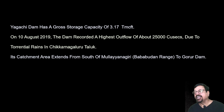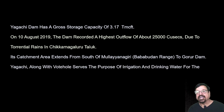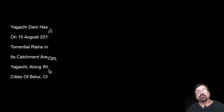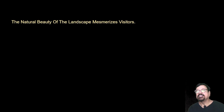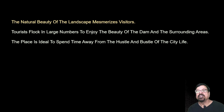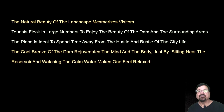The catchment area extends from south of Mulaiya Nagari — the Bababudan range — to the Gorur Dam. Yagachi, along with Vate Hole, meets the irrigation and drinking water needs of Chikamangaluru and Hassan districts. The natural beauty of the landscape is mesmerizing; tourists flock in large numbers to enjoy the dam and surrounding areas. The place is ideal to spend time away from the hustle and bustle of city life. The cool breeze of the dam rejuvenates the mind and body.